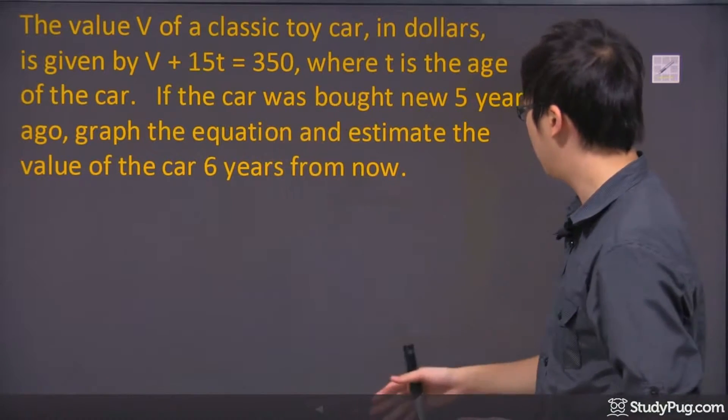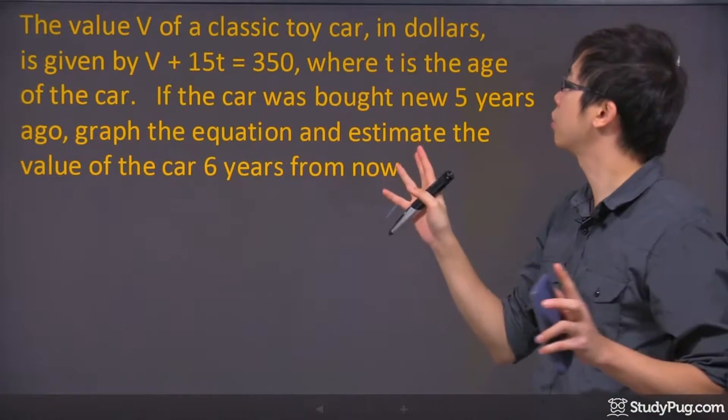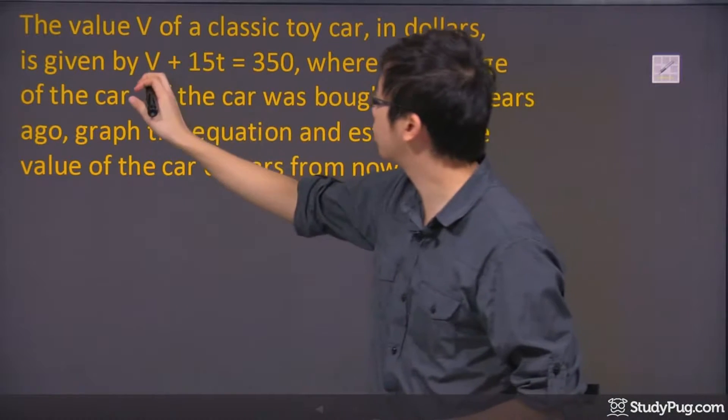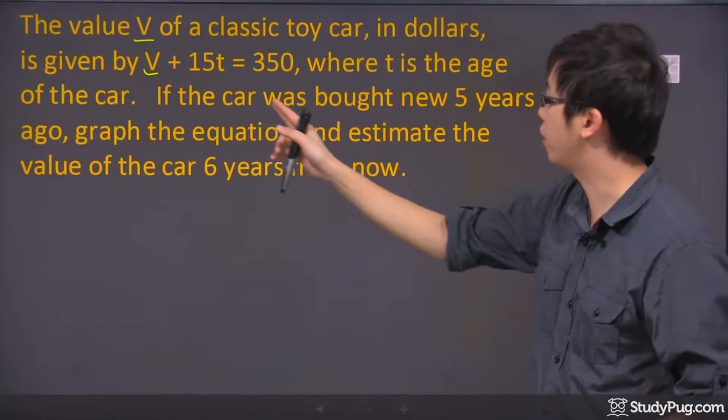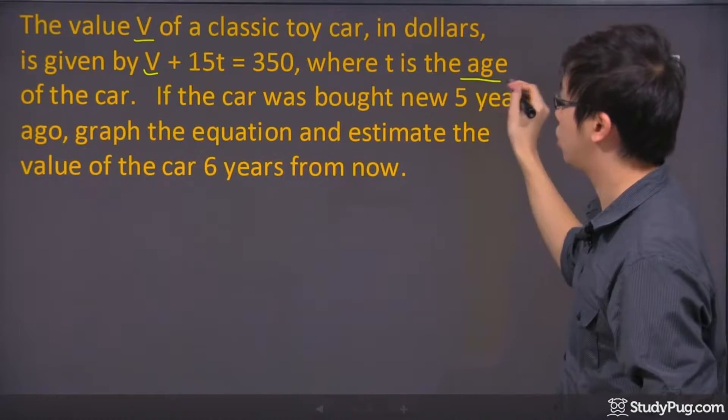We've got a little bit of an application question. We've got a value V, which is a classic toy car, quite expensive in dollars. So this is the amount of dollars of a toy car, and this is the equation for that. The t is the age of the car.